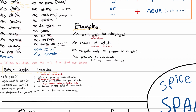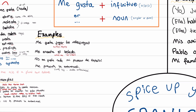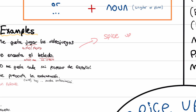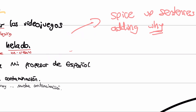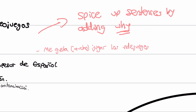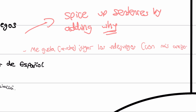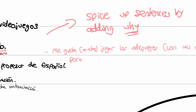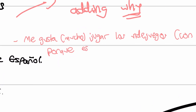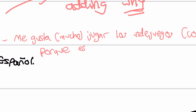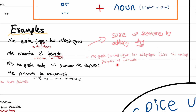Now, moving on — how can we make these examples even better? They're quite short, only a couple of words. Spice up sentences by adding why, by adding a reason. For example, me gusta jugar los videojuegos con mis amigos. Now let's add the reason using porque. Porque es entretanido — because it is entertaining. So we've gone from a simpler five-word sentence to a more complex sentence with a reason: porque es entretanido.